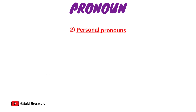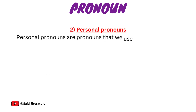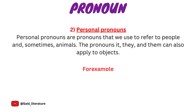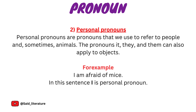Personal Pronouns: Personal pronouns are pronouns that we use to refer to people and, sometimes, animals. The pronouns it, they, and them can also apply to objects. For example, 'I am afraid of mice.' In this sentence, 'I' is a personal pronoun.